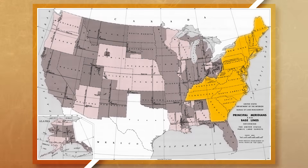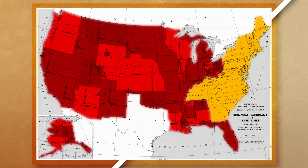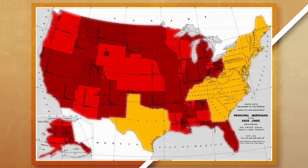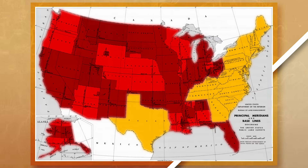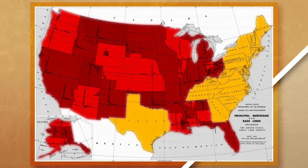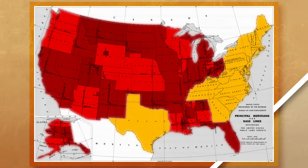Metes and bounds is used more on the east coast of the United States, with the rest of the country using more township and range as a survey method — with the exception of Texas, which was not part of the United States until later and was influenced more by Spanish and Mexican rule, causing Texas to use more metes and bounds. This contrasts with the Midwest and western parts of the country, where township and range is the main survey method.